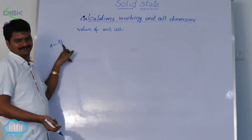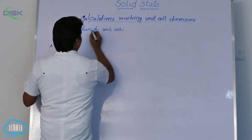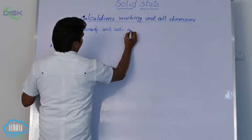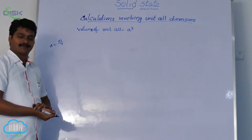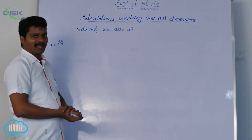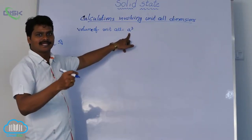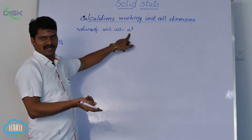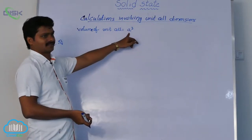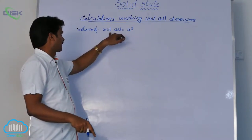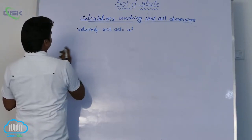Mass of unit cell, and volume of unit cell means A cubed. So you can calculate the volume of the unit cell using the formula A cubed, where A is the edge length. For a cubic system, volume equals edge length cubed. The edge length A is determined using X-ray diffraction analysis — from X-ray diffraction we find the edge length, and from that we calculate the volume of the unit cell.